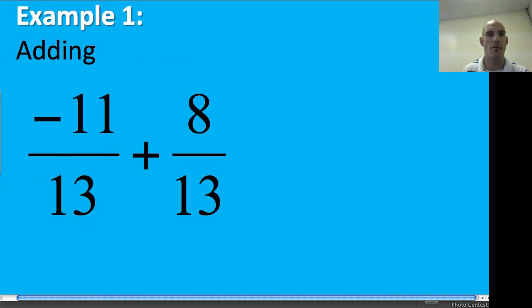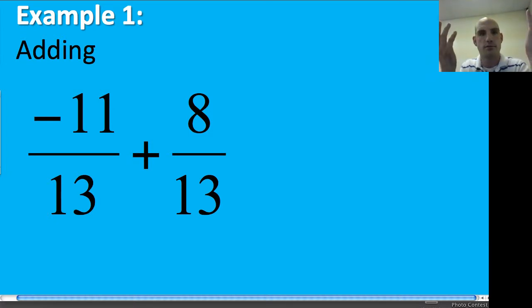Here's what it looks like. Let's just do an example. Let's say I have negative 11 thirteenths plus 8 thirteenths. How many do I have? What does this actually mean? Well I know that I'm adding thirteenths so my total is going to be out of 13. I don't add the bottoms because I still need it out of thirteenths.